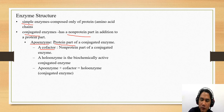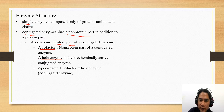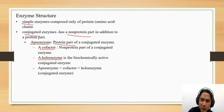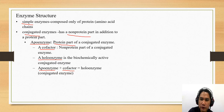A biochemically active conjugated enzyme is called a holoenzyme. So what is a holoenzyme? It is the biochemically active conjugated enzyme. In order to become a holoenzyme, it must have an apoenzyme plus a cofactor.